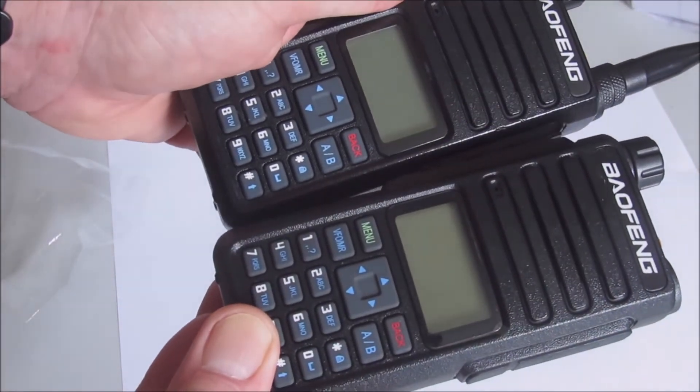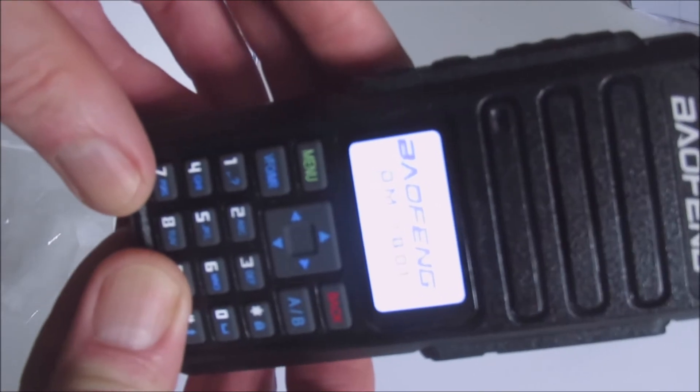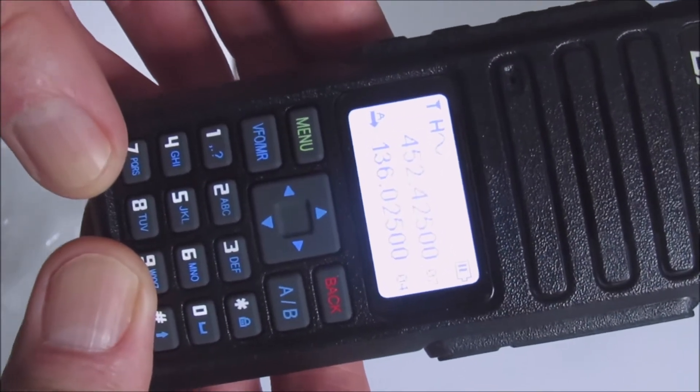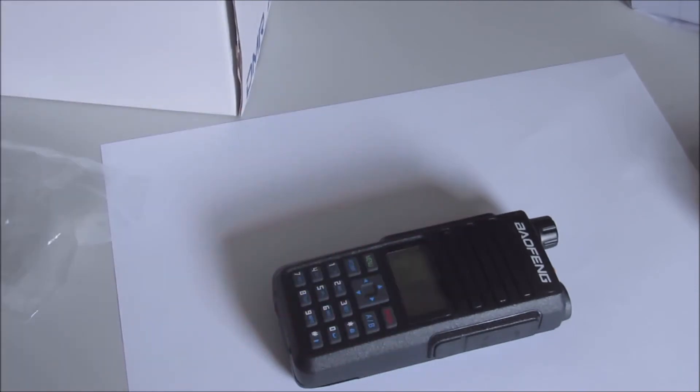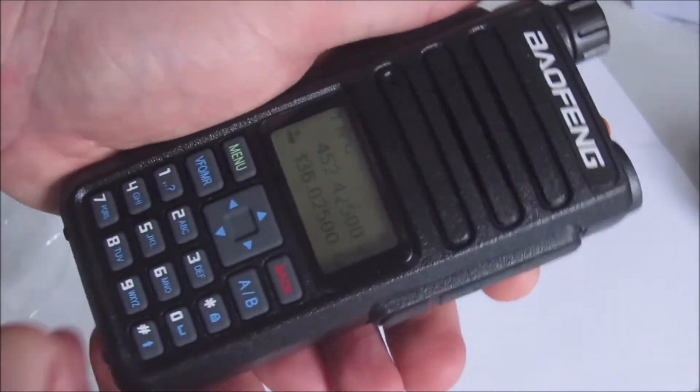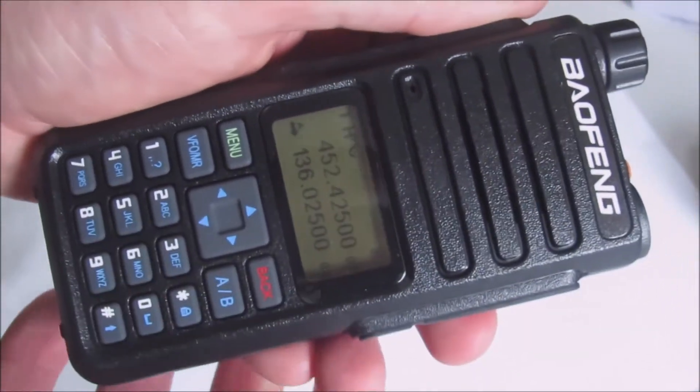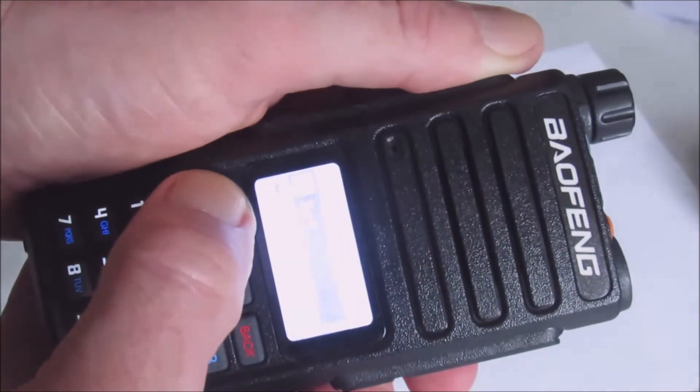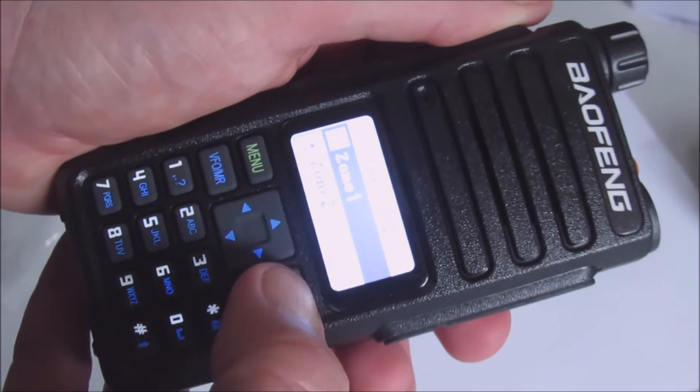You'll see them there. This one, interestingly, when you switch it on - I don't know if the camera will pick it up - but this is a DM1801. As I said, it's absolutely identical in every way. This one is out of the box, it's using the standard Baofeng firmware, and nothing's been programmed into it yet.